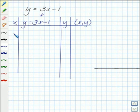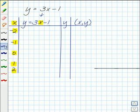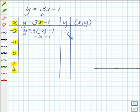So we're going to put negative 2, negative 1, 0, 1, and 2, and plug these into x and solve for y. y equals 3 times negative 2 minus 1. 3 times negative 2 is negative 6, and negative 6 minus 1 is negative 7. So our first ordered pair is (negative 2, negative 7). y equals 3 times negative 1 minus 1. 3 times negative 1 is negative 3, and negative 3 minus 1 is negative 4. Our next ordered pair is (negative 1, negative 4).